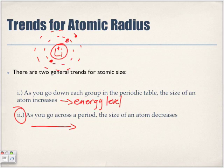As we add an electron for lithium, the size of the atom, as we said, as we move down the group increases, because we're adding an energy level. That electron is further away from the nucleus.